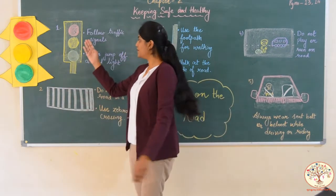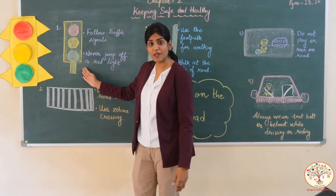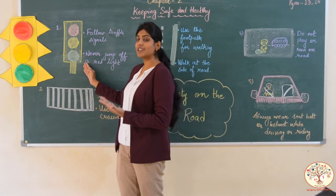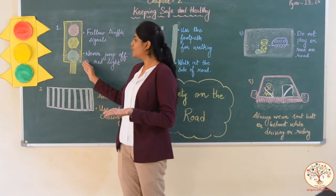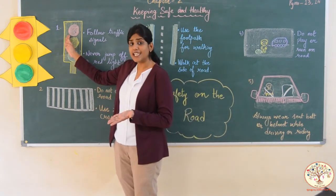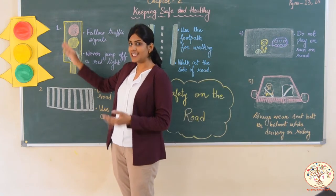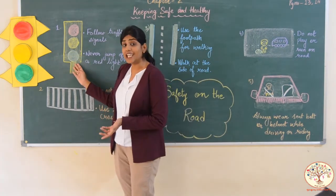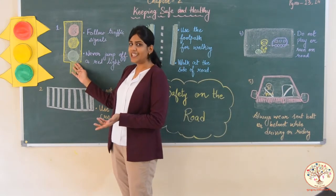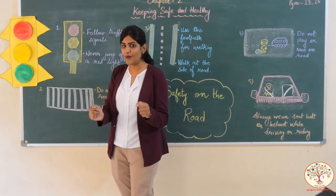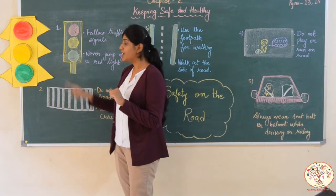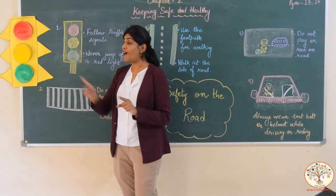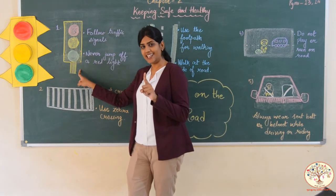Now, look at the picture here. Can you name this picture? Yes, it is a traffic signal. Do you know what the red light tells us? Red light tells us to stop. And what does the green light tell us? Green light tells us to go. And what about yellow? Yellow tells us to slow down and wait for the red or green light.